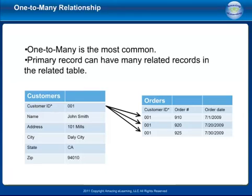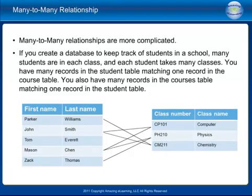One-to-many is the most common relationship type, where a primary record can have many related records in the related table. Many-to-many relationships are more complicated. For example, in a school database, many students are in each class and each student takes many classes. You have many records in the student table matching one record in the course table, and many records in the courses table matching one record in the student table.